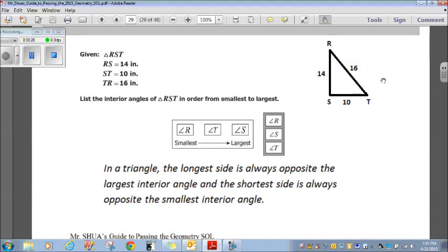14 is the next smallest. That's across from T. So, T would go here. 16 is the largest. And that's S. It would go here. So, you would drag the R to the smallest. You would drag the T in the middle. And you would drag the S to the largest. And then you're done. On to the next question.